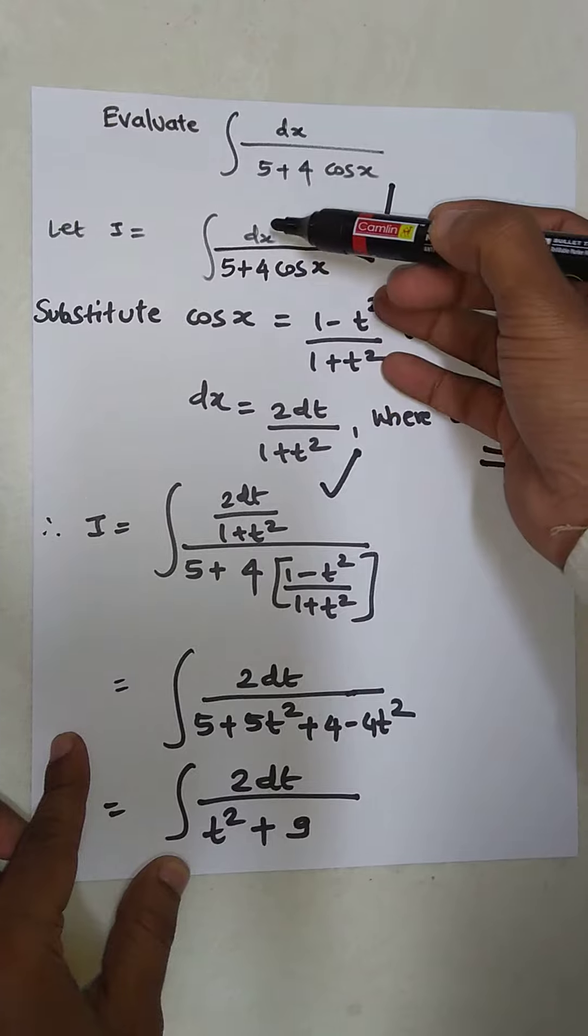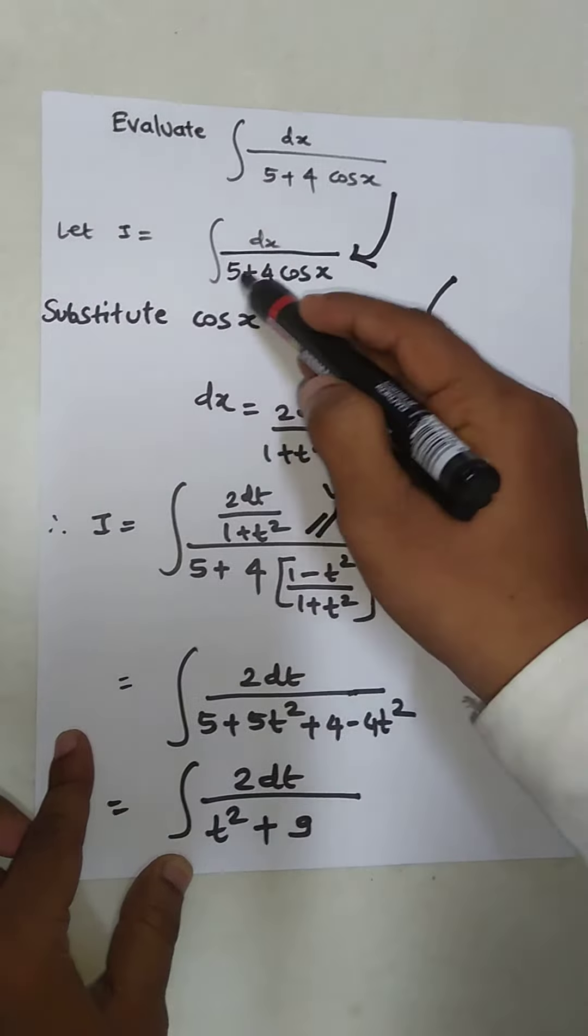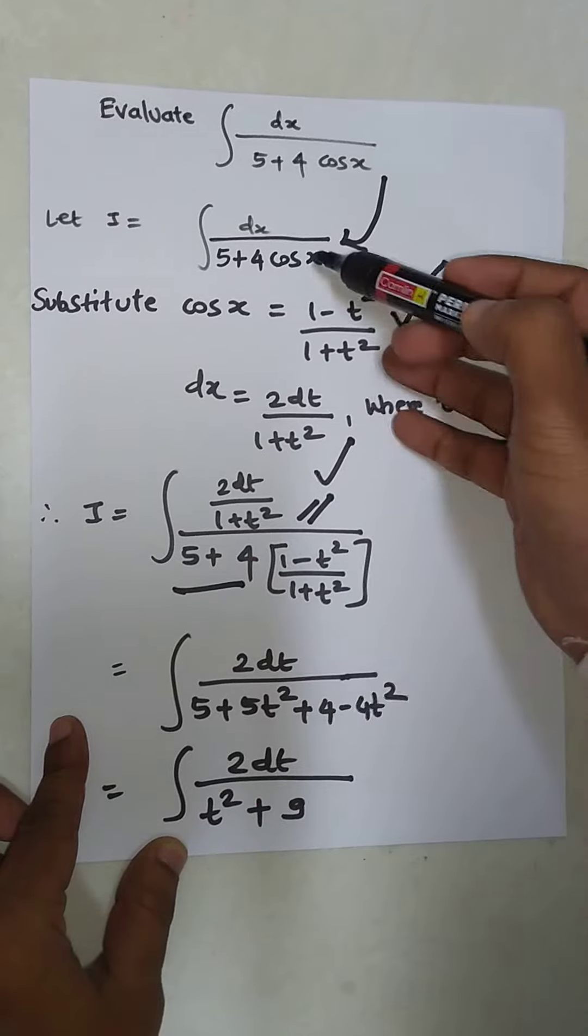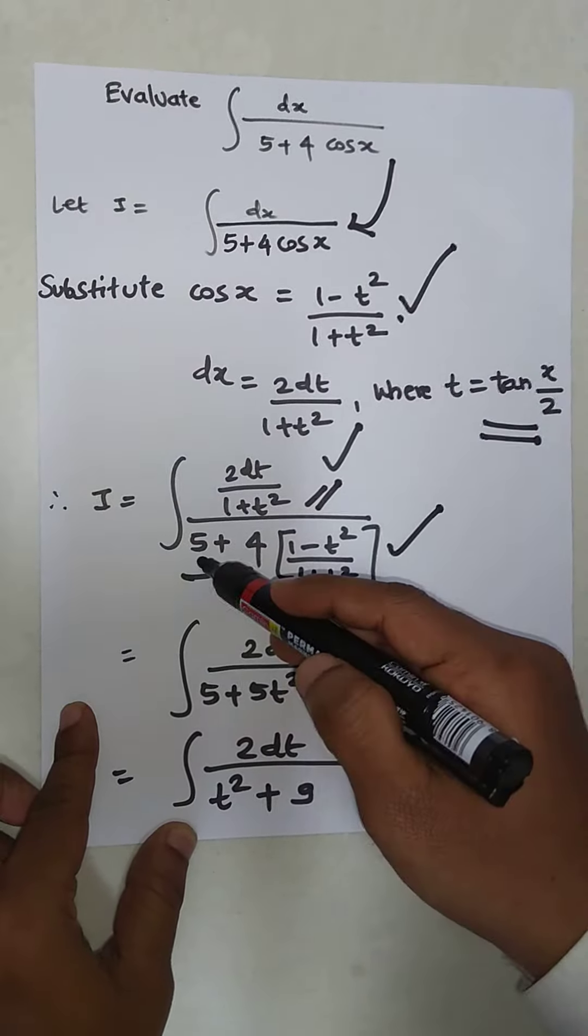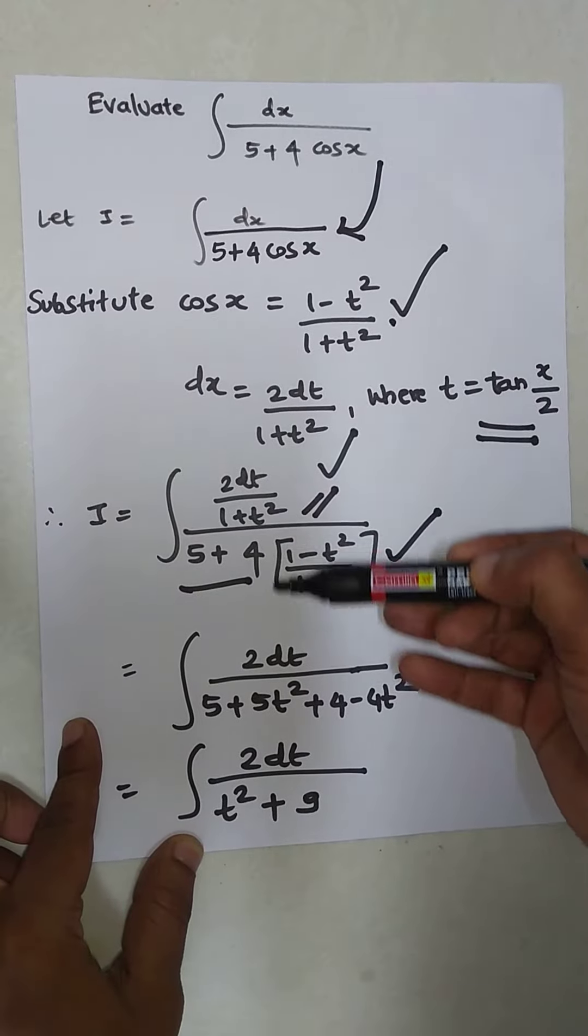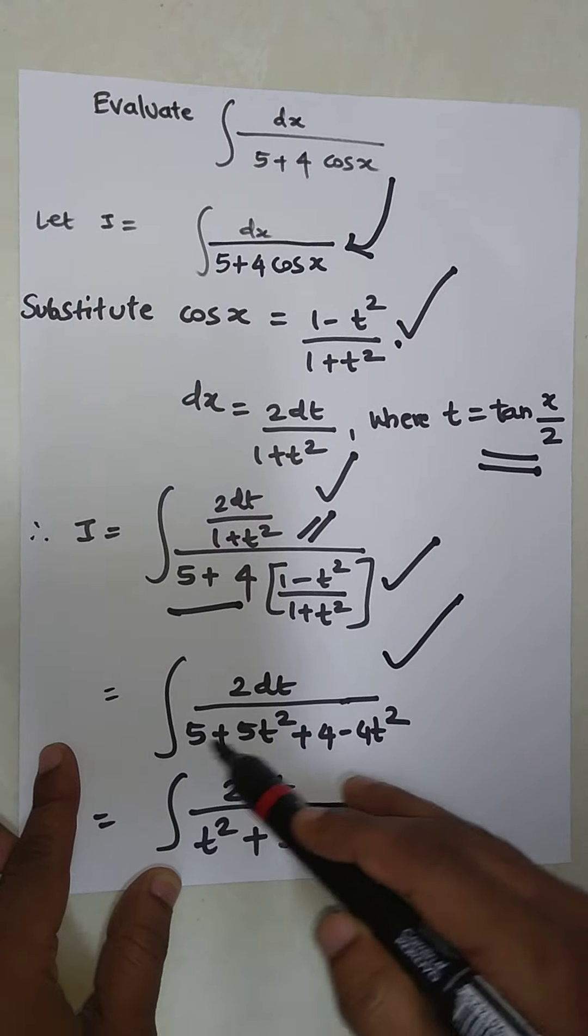So I equals the integral where instead of dx we write this expression in the numerator, and 5 + 4, instead of cos x we write the substitution. Taking LCM so that the terms with (1 + t²) get cancelled, it becomes 2dt upon...